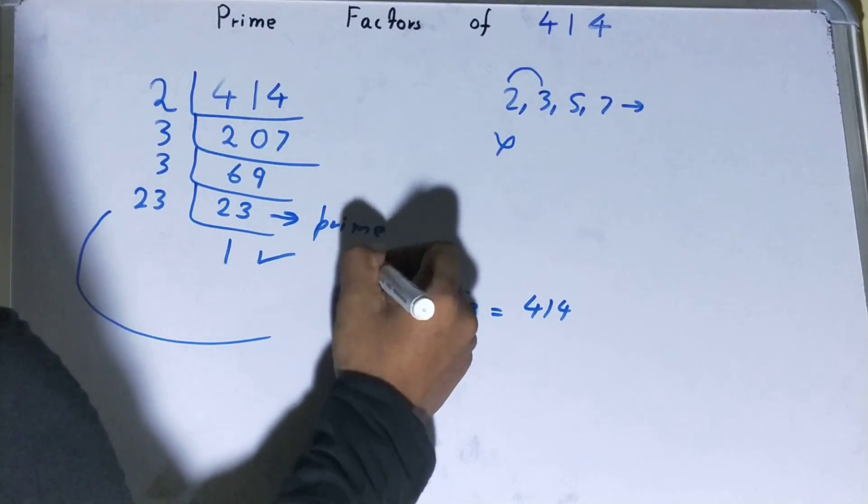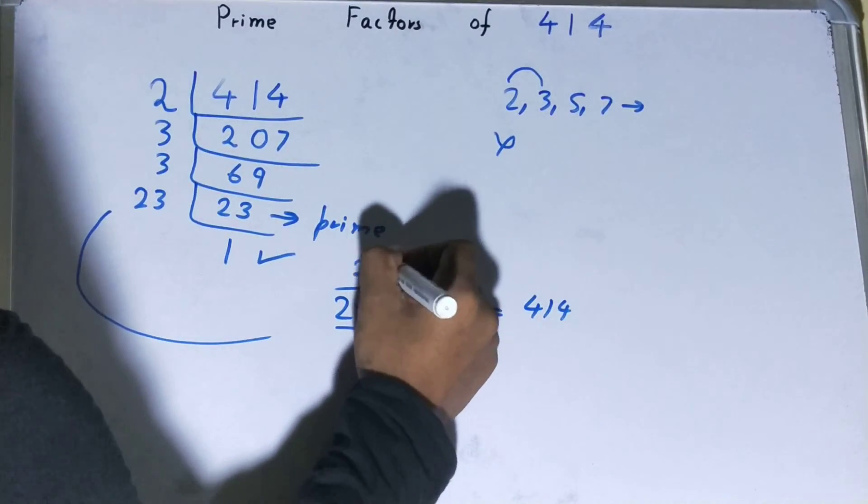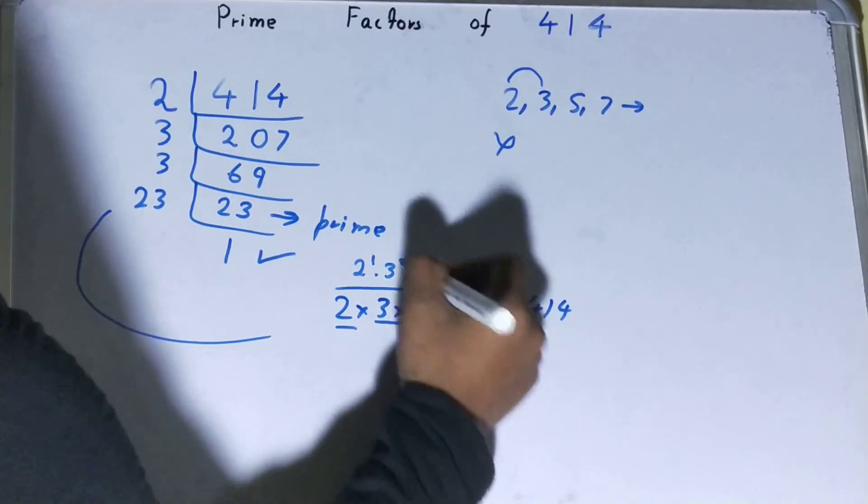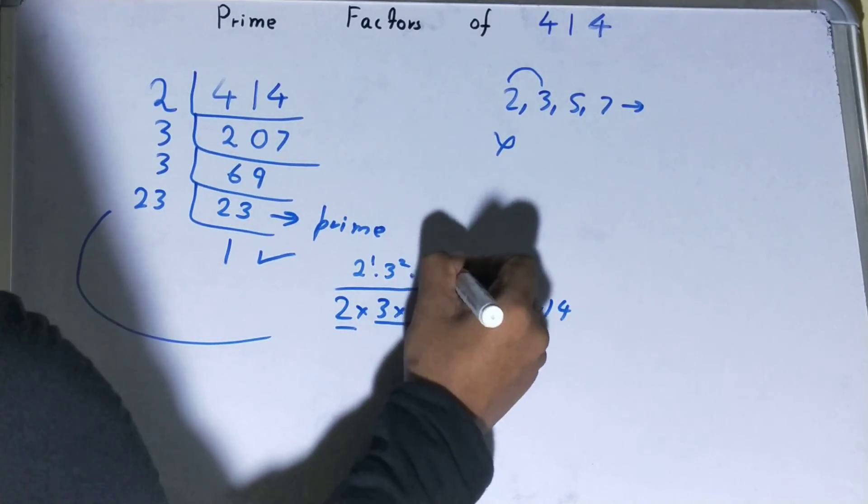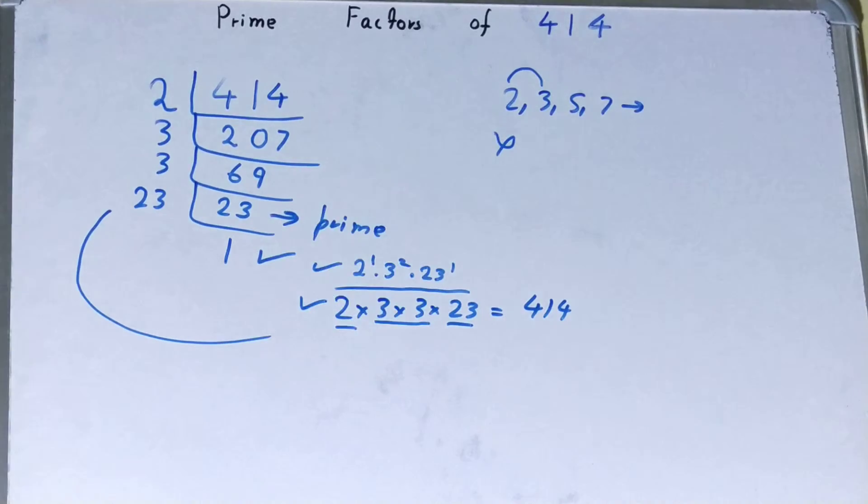You have one time two, so you can write it as 2 raised to power 1. You have two times three, so you can write it as 3 raised to power 2. You have one time 23, so you can write it as 23 raised to power 1. You can write it this way or that way, it's up to you.